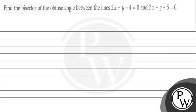Hello, let's read the question. The question says: find the bisector of the obtuse angle between the lines 2x + y - 4 = 0 and 3x + y - 5 = 0. This question has two lines: 2x + y - 4 = 0 and 3x + y - 5 = 0. This is the obtuse angle bisector.